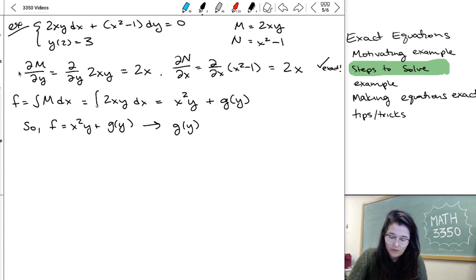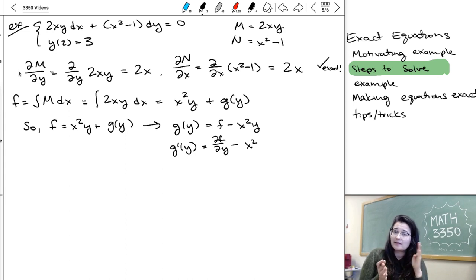So, we know that f is x squared y plus g of y. You're just going to have to trust me on the g thing if you don't already know that. And then, if we write it that way, we know that g is equal to f minus x squared y. So that means, if I took the derivative with respect to y, I would have df/dy minus the derivative of x squared y with respect to y is just x squared, because I treat x squared like a constant, derivative of y is 1.